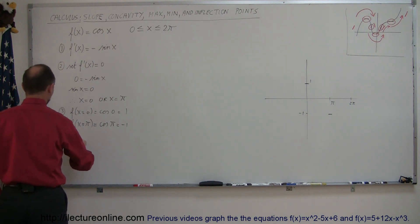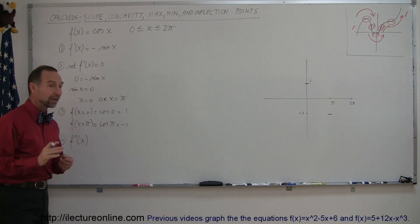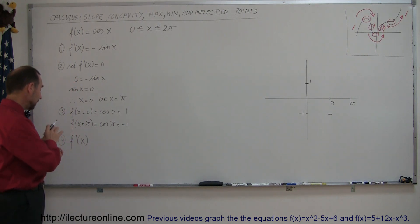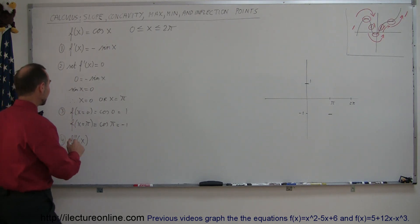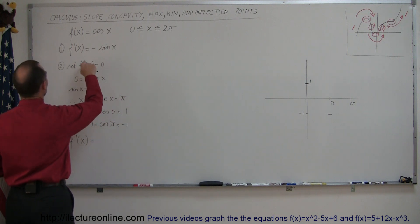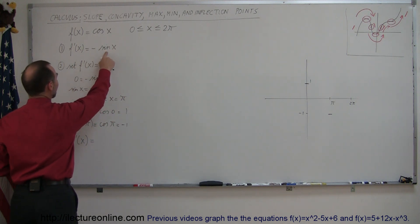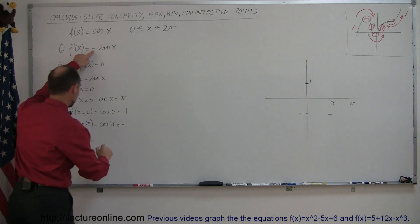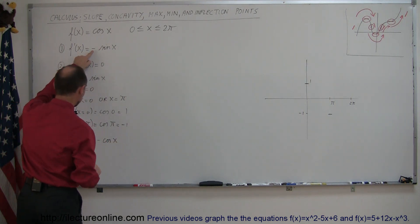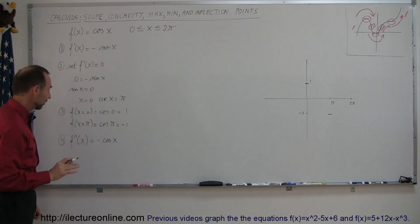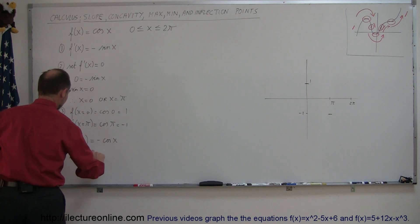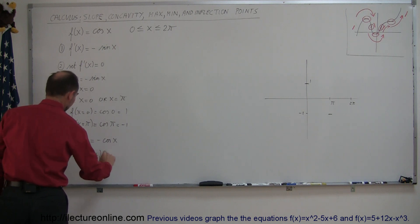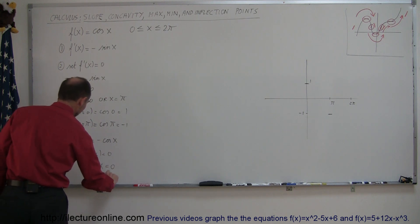Step 4: find f double prime of x. By getting the second derivative, we can find the inflection points and figure out the concavity of our function. f double prime of x: going back to f prime of x, which is negative sine of x, the derivative of sine is cosine, so f double prime of x equals negative cosine of x. Now for step 5, we set f double prime of x equal to 0, which means negative cosine of x equals 0, so cosine of x equals 0.